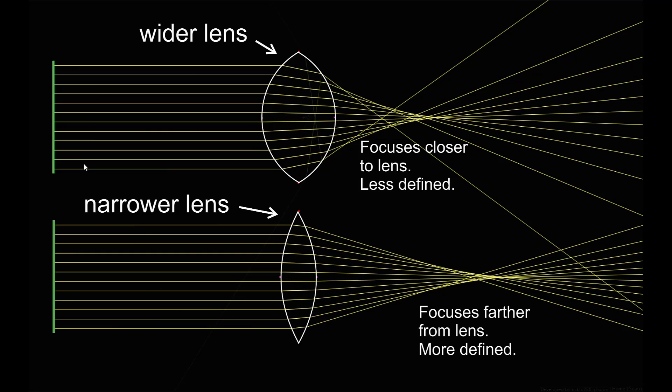If we take two lenses that are the same height but make one of them wider than the other, we notice that the distance from the lens where the beams come together is closer on the wider lens than on the narrower lens. On neither lens do the beams all cross in the same point, but they come closer to doing so on the narrower lens than on the wider lens.